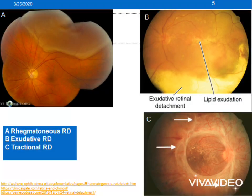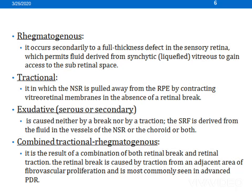The photos presented here show the three types: the first one is rhegmatogenous RD, the second is exudative RD, and the third is tractional RD. Rhegmatogenous RD occurs secondary to a full-thickness defect in the sensory retina, which permits fluid derived from the vitreous to gain access to the sub-retinal space. Tractional RD occurs when the neurosensory retina is pulled away from the RPE layer. Exudative RD occurs due to the passage of fluid from the choroid into the space between the RPE and the neurosensory retina.